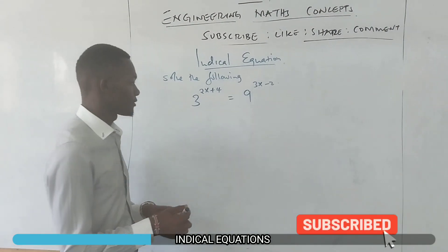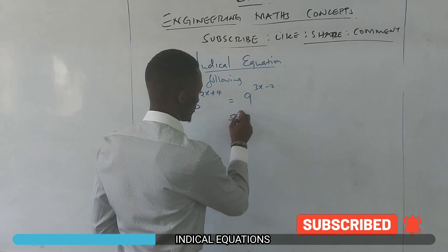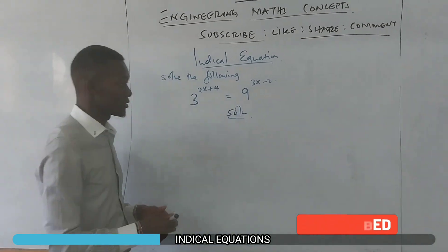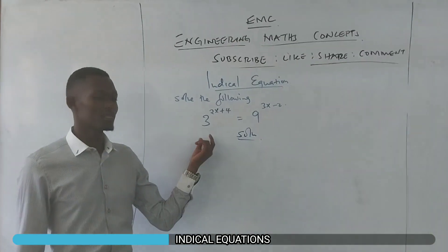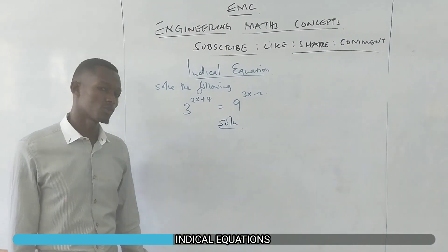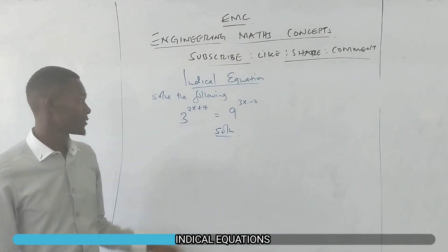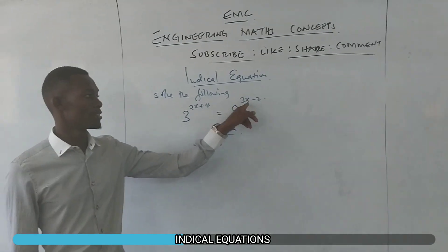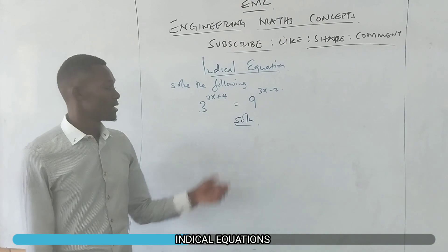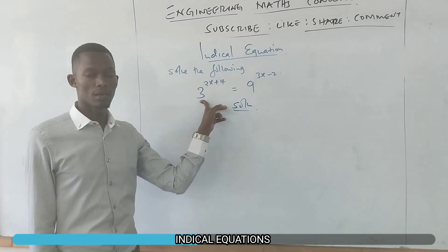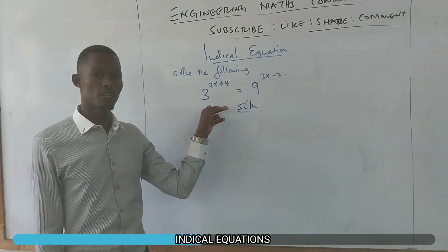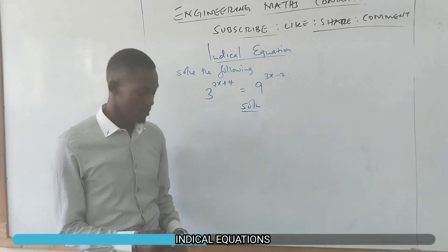So how do you solve such kind of an equation? Basically what we do here is to convert whatever is on this side to be the same on the other side. So we have a 3 raised to a certain power and we have 9 raised to a certain power. Therefore, we can rewrite 9 as a base of 3 and we raise it to a power.